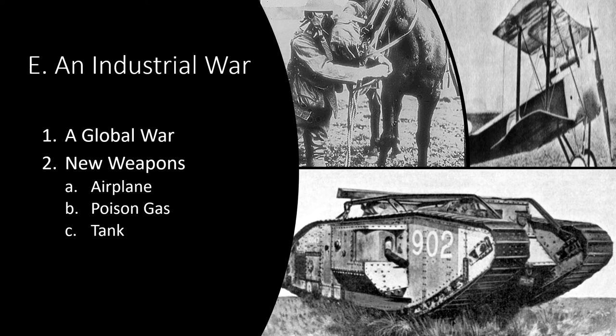Mustard gas, getting its name from its yellow hue, would be developed and delivered by artillery shells. Masks and other protective devices were developed to protect horses, mules, dogs, and even carrier pigeons. The tank, introduced by the British in 1916 at the Battle of the Somme, proved to be clumsy and slow, and received its name because it looked like a water tank.